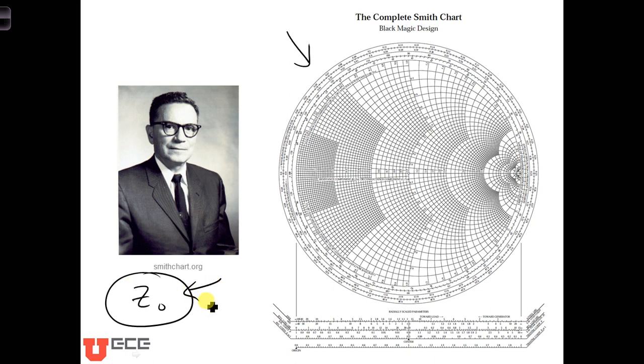Further, when we want to see how the input impedance changes along the transmission line, we will consider distances in terms of wavelengths, rather than in terms of actual meters.